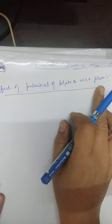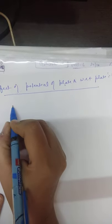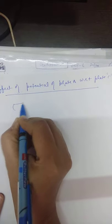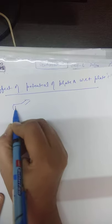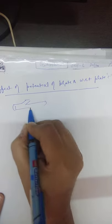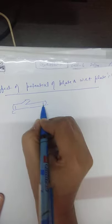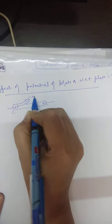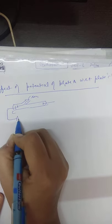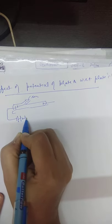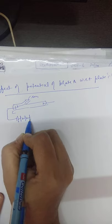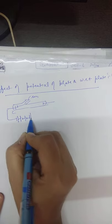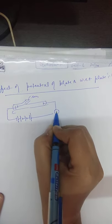Students, the second point is the effect of potential of plate A with respect to plate C on photoelectric current. We have this diagram drawn in the experimental demonstration. This is the cathode, this is the anode. Here the light falls from a source. It is connected to the battery's negative terminal, and this is connected to the battery's positive terminal — negative and positive — through a microammeter.